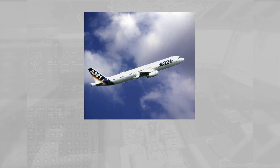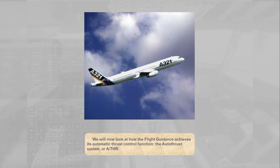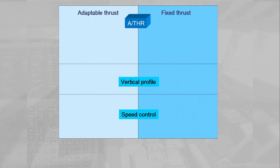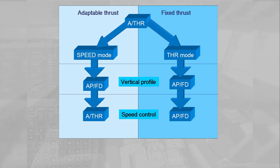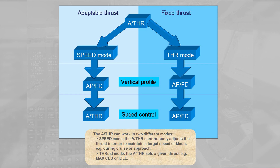We will now look at how the flight guidance achieves its automatic thrust control function — the autothrust system, or autothrust. The autothrust can work in two different modes. Speed mode: the autothrust continuously adjusts the thrust in order to maintain a target speed or Mach, e.g. during cruise or approach. Thrust mode: the autothrust sets a given thrust, e.g. max climb or idle.